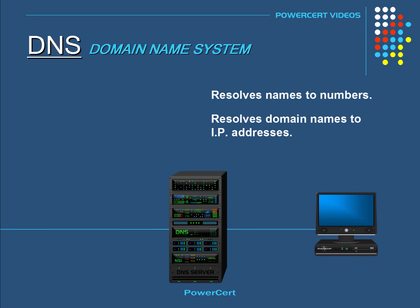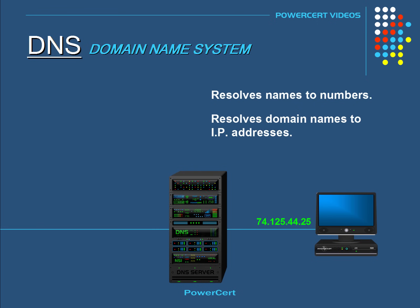So for example, if you wanted to go to a certain website, you would open up your web browser and type in the domain name of that website. Let's use yahoo.com. Now technically, you really don't have to type in yahoo.com to retrieve the Yahoo webpage. You can just type in the IP address instead if you already knew what the IP address was. But since we are not accustomed to memorizing and dealing with numbers, especially when there are millions of websites on the internet, we can just type in the domain name instead, and let DNS convert it to an IP address for us.